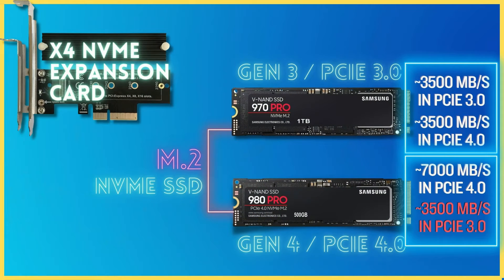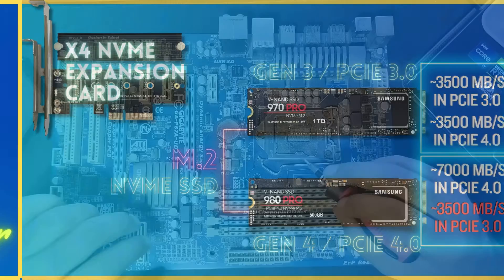If you want to add more M.2 NVMe SSDs to your PC, you can get an M.2 NVMe expansion card. These require at least an X4 slot. An expansion card with a single M.2 NVMe slot requires an X4 slot, cards with two M.2 NVMe slots require an X8 slot, and a card with four M.2 slots would require an X16 slot.